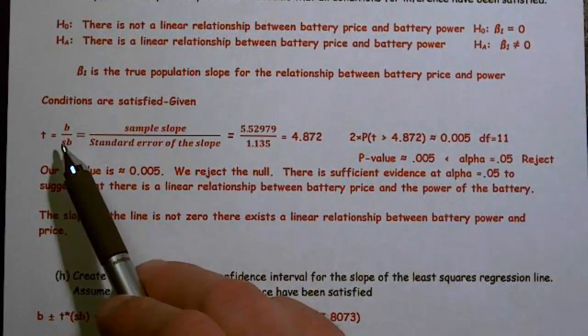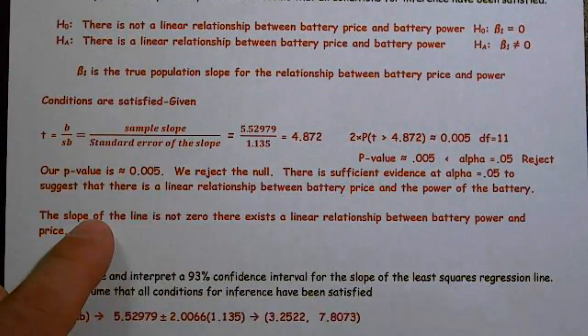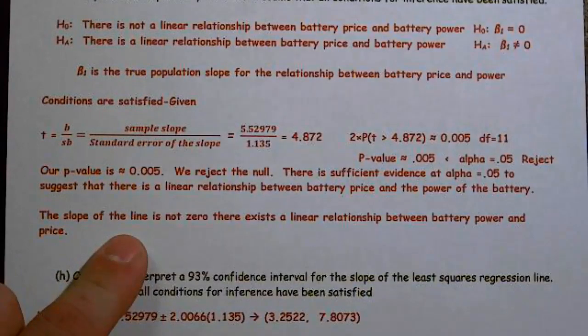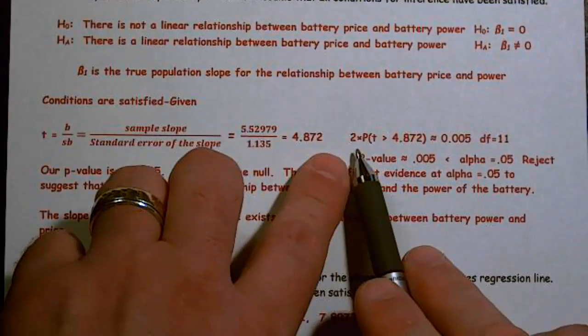Beta 1 is the true population slope for the relationship between battery price and power. Our formula, B over SB. Well, B is the sample slope over the standard error of the slope. Those values came directly off the table, 5.5 and 1.135. When I get that, I get a T statistic of 4.872.